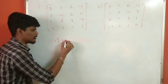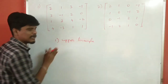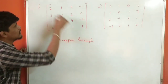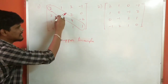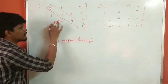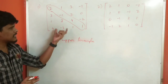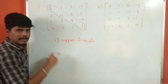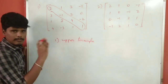If you want to find the rank of the matrix, you will convert the matrix. So first, we can convert this to an upper triangle matrix. If we convert it in that way, we can proceed.